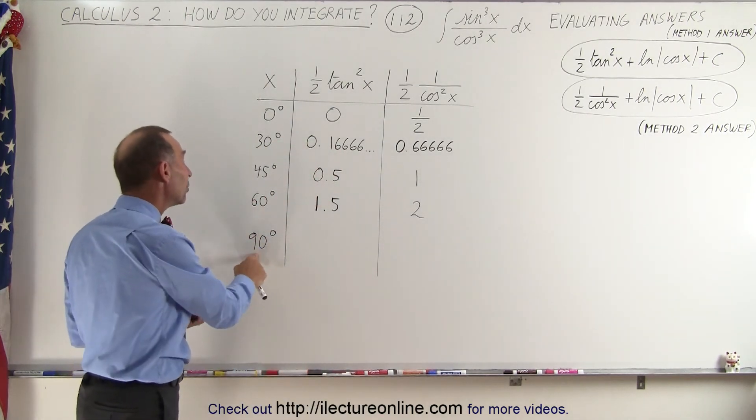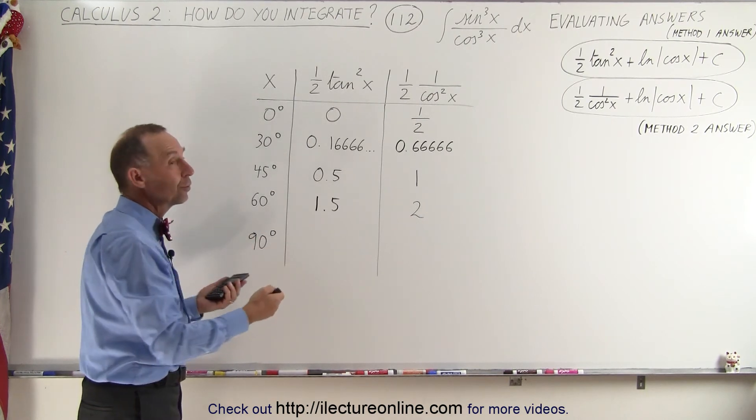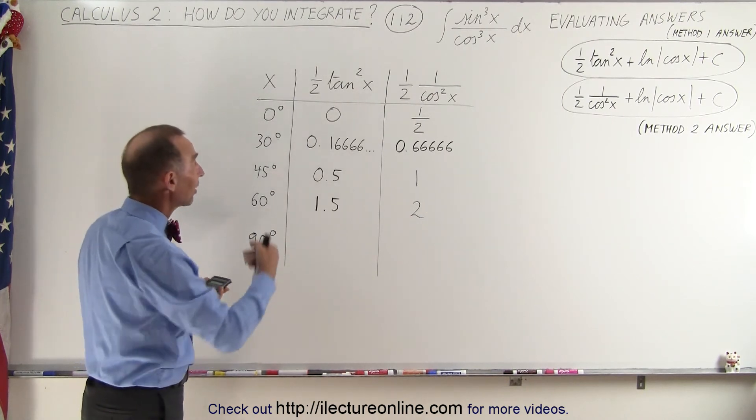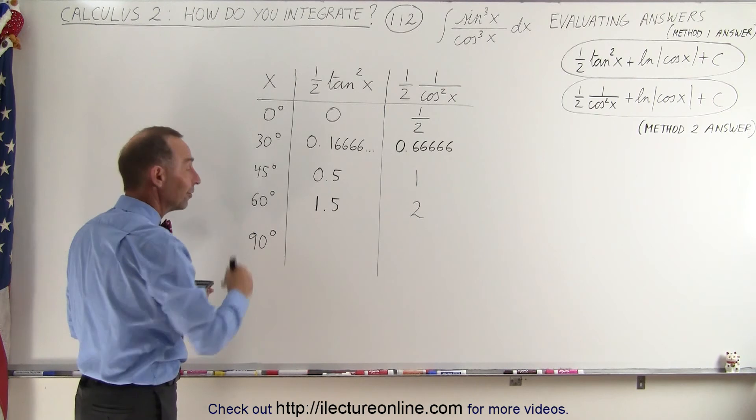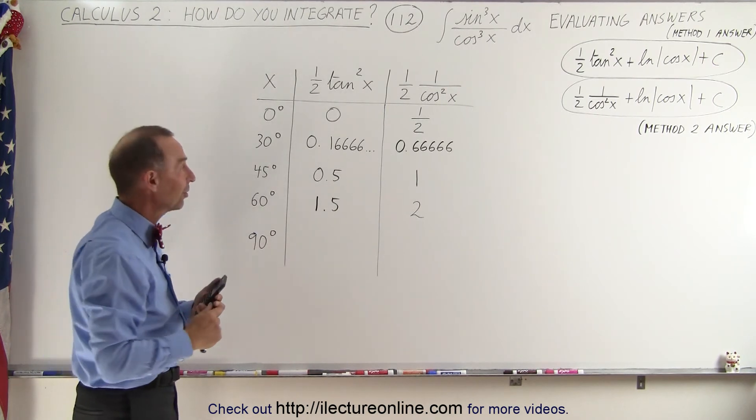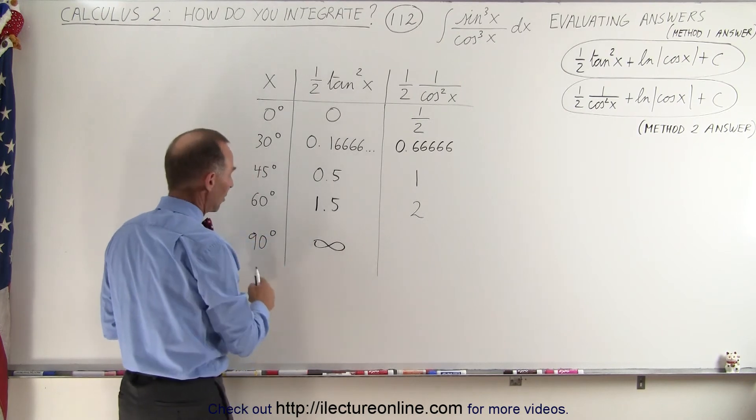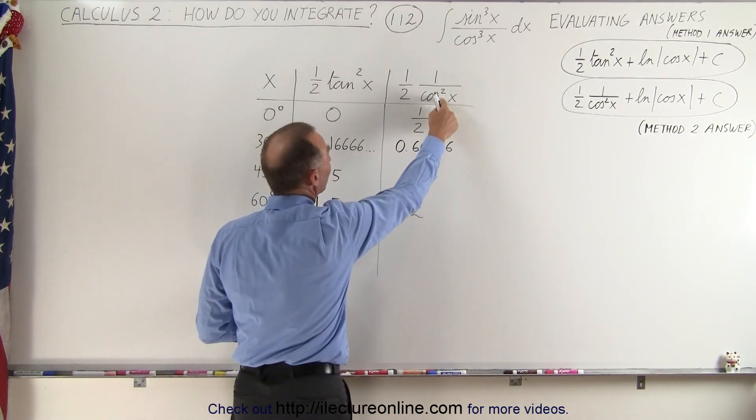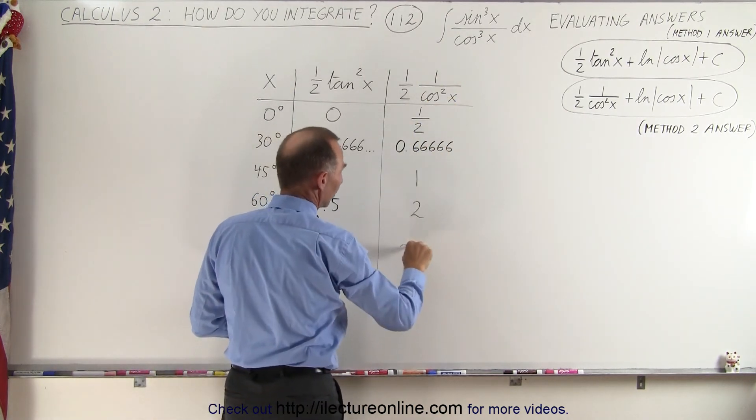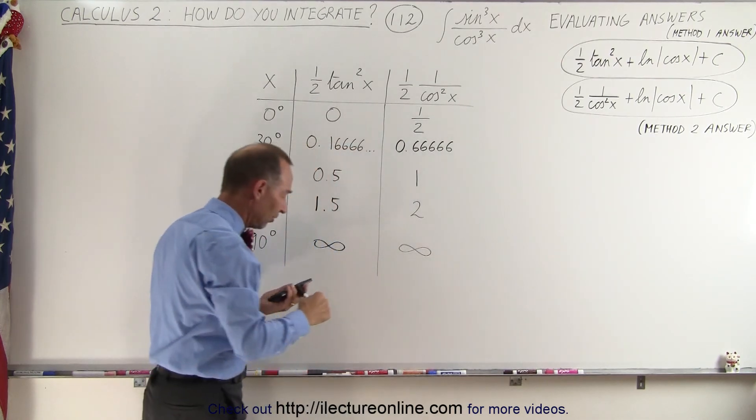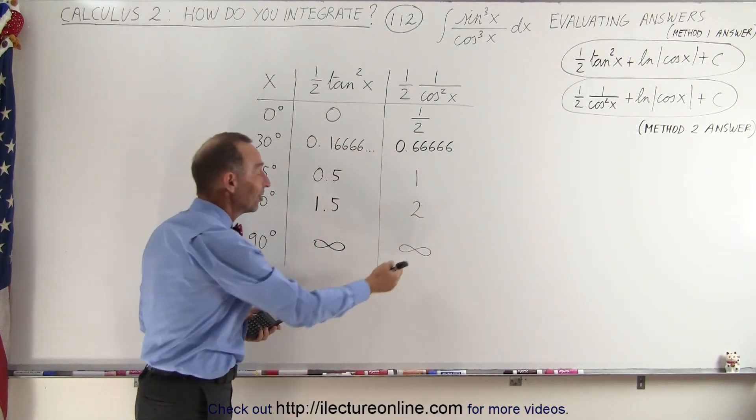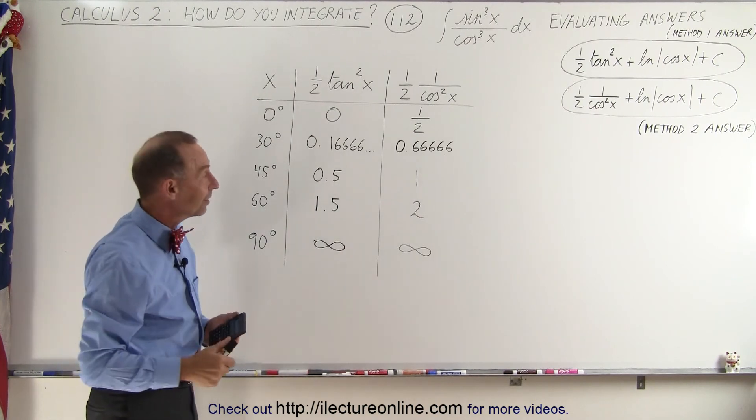Now of course when we plug in 90 degrees, the tangent of 90 degrees is undefined, because that's the sine over the cosine, and the cosine of 90 degrees is 0, so we get a 0 denominator, undefined, or the result is infinity. Same over here, plug in 90 degrees, we get 1 divided by 0, so it's infinity. At that point, of course, we can't tell that this is exactly 0.5 larger than that, because it's undefined.